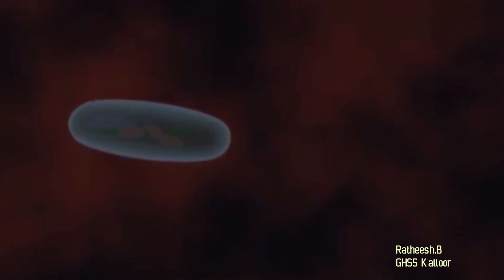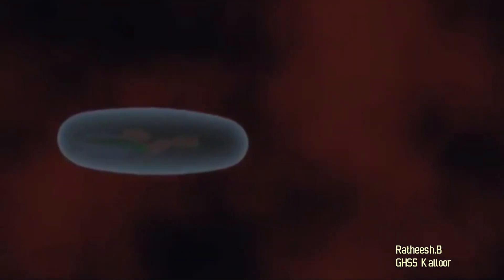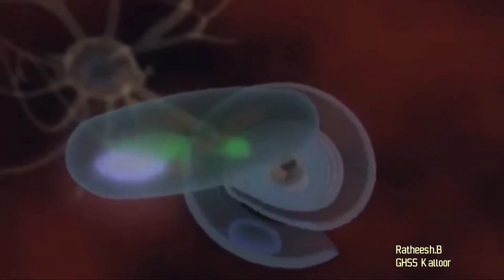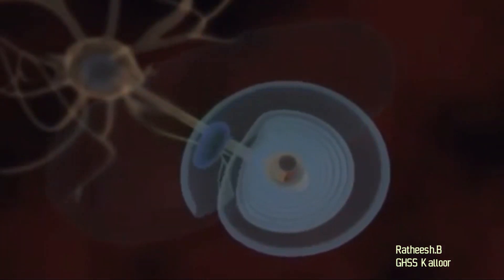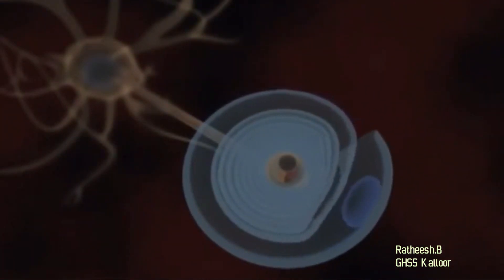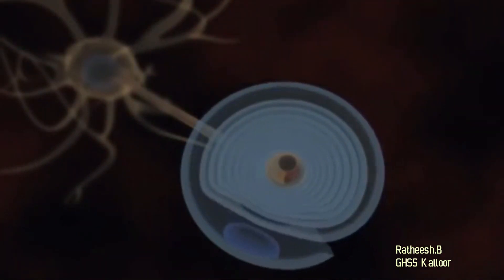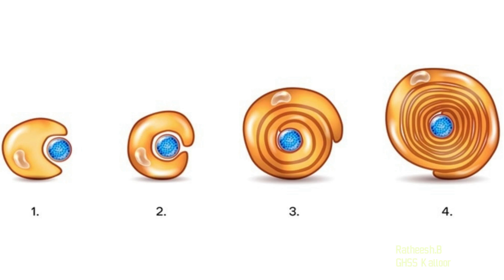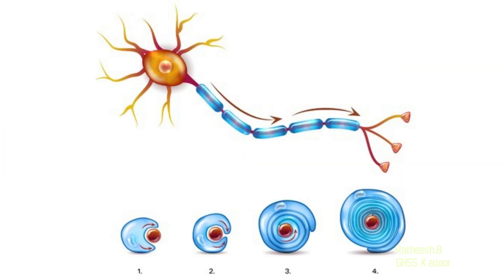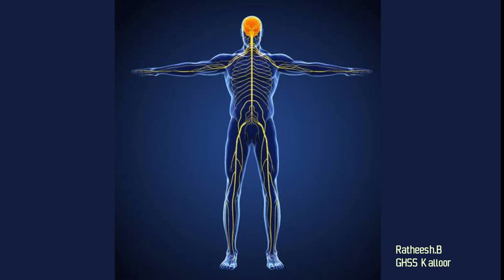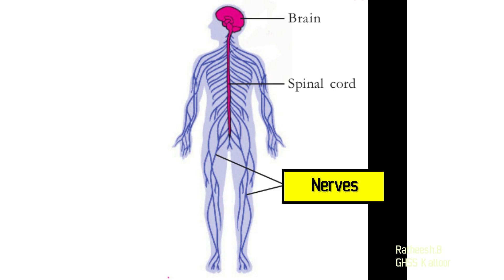Let us examine how Schwann cells form the myelin sheath. Schwann cells repeatedly encircle the axon to form myelin sheath. In the video, you can see the Schwann cell repeatedly encircling the axon, and as a result, myelin sheath is formed. In the nerve, myelin sheath is formed by Schwann cells.